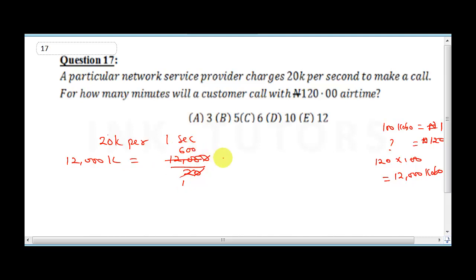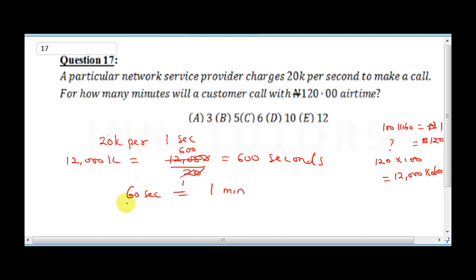That gives us 600 seconds. But the question asks for minutes, so we need to convert seconds to minutes. Remember, 60 seconds make one minute. Therefore, 600 seconds divided by 60 gives us 10 minutes.